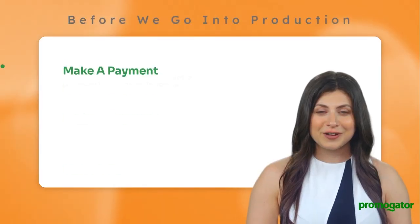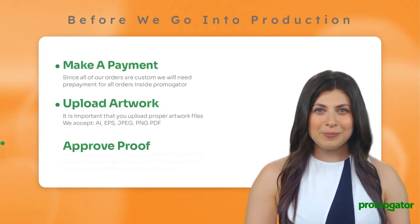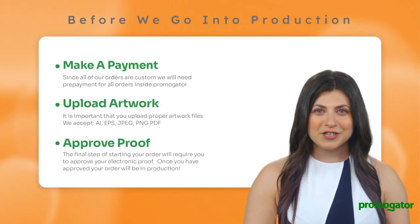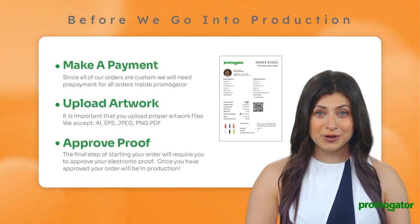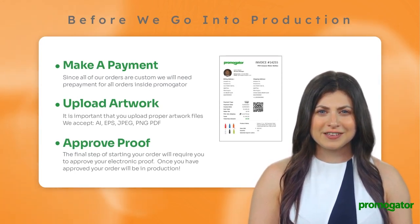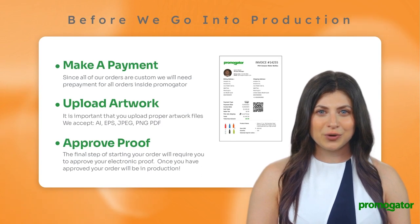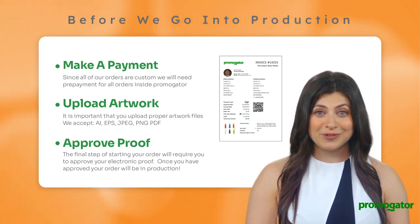Anytime you place an order, the Promogator platform will issue you an order number and also email you a copy of our official invoice for your records. This unique order number will contain all the details for your order.